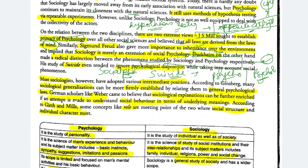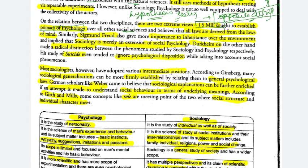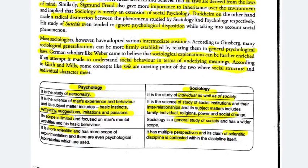Where thinkers gave primacy to psychology: J.S. Mills and Sigmund Freud. Where primacy was given to sociology: Durkheim. Now let's see those who held intermediate positions. At one end you get Sigmund Freud and J.S. Mills; at the other end you get Durkheim. In between, there are thinkers who saw psychology and sociology as enriching each other.